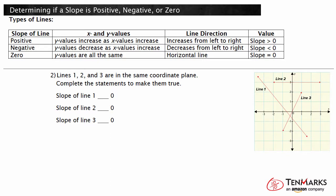Lines 1, 2, and 3 are in the same coordinate plane. Complete the statements to make them true. We need to determine what type of line each is, and we can use the chart to help. Line 1 decreases as it goes from left to right, so this is a negative slope — negative slopes are less than zero. Line 2 is horizontal, so this slope is zero — zero slopes are equal to zero. Line 3 increases as it goes from left to right, so this is a positive slope — positive slopes are greater than zero.